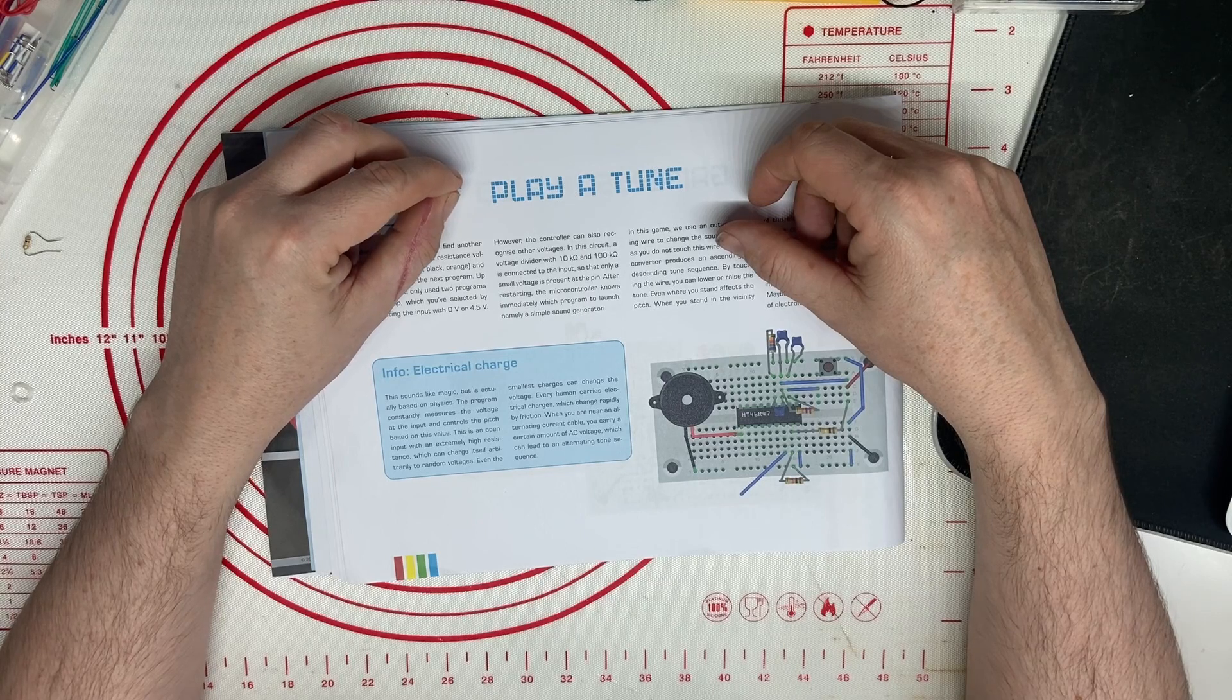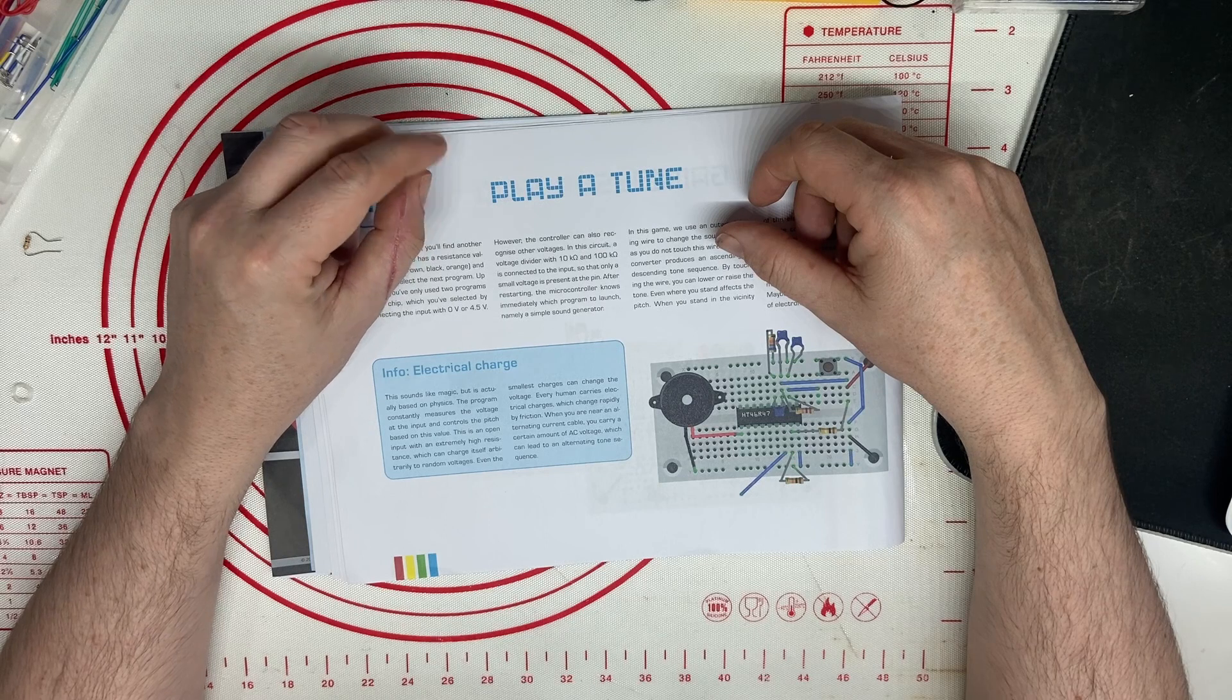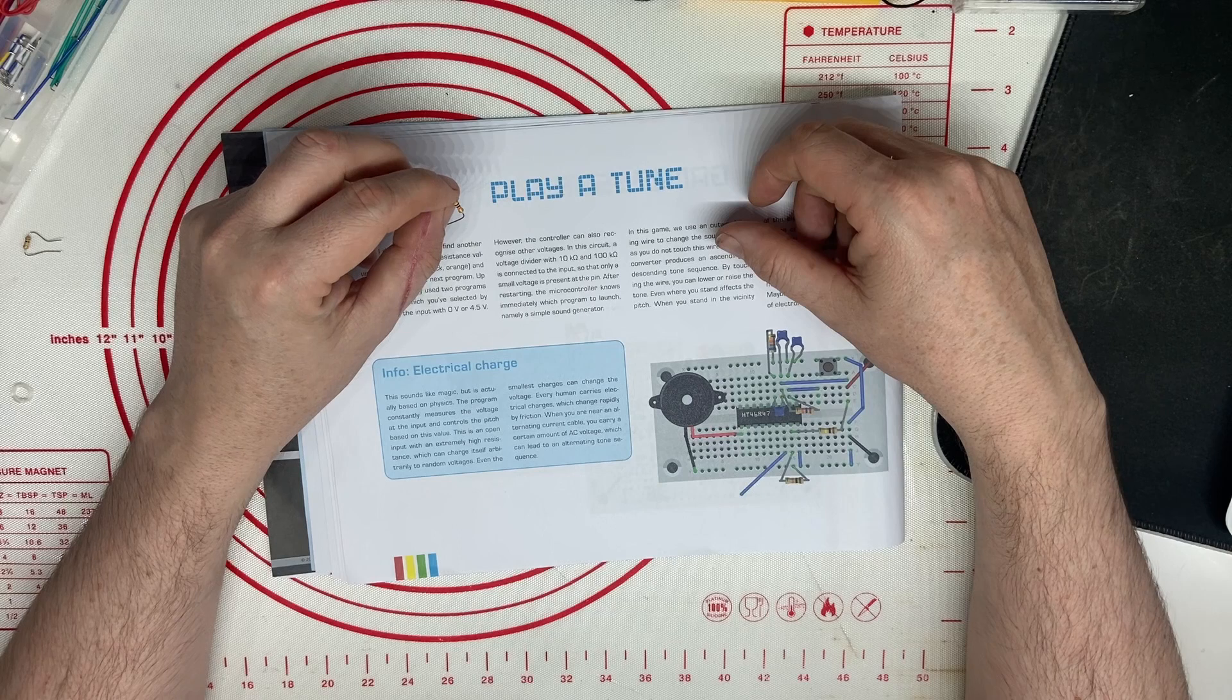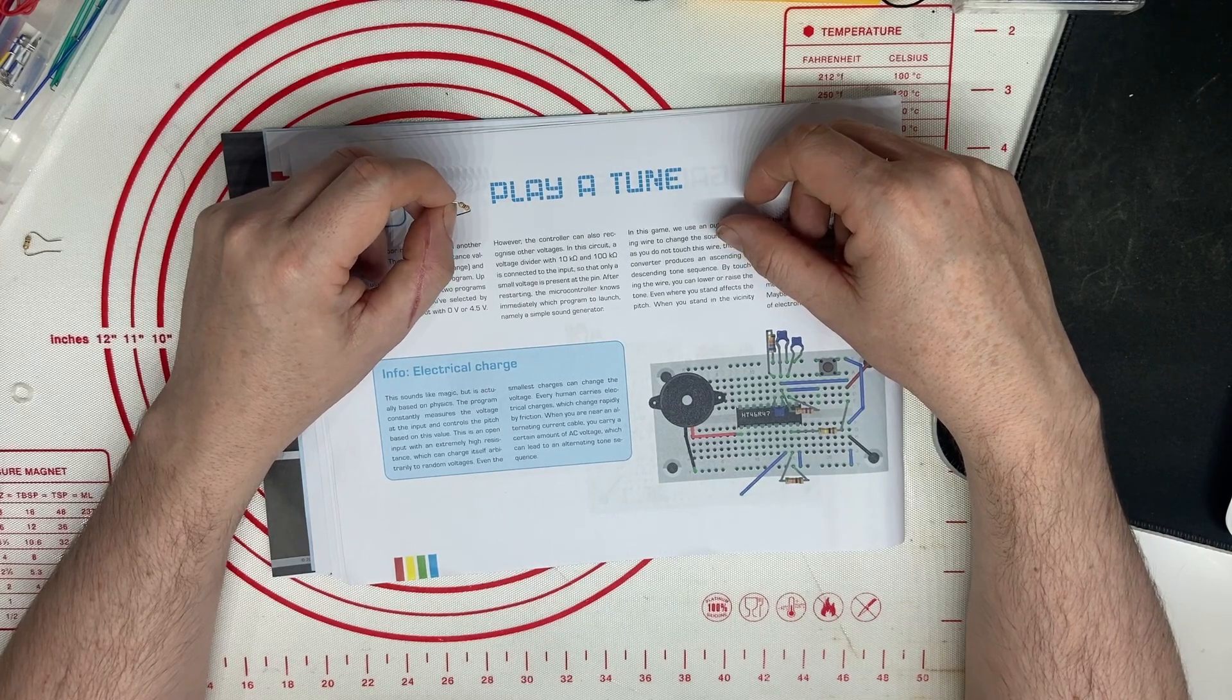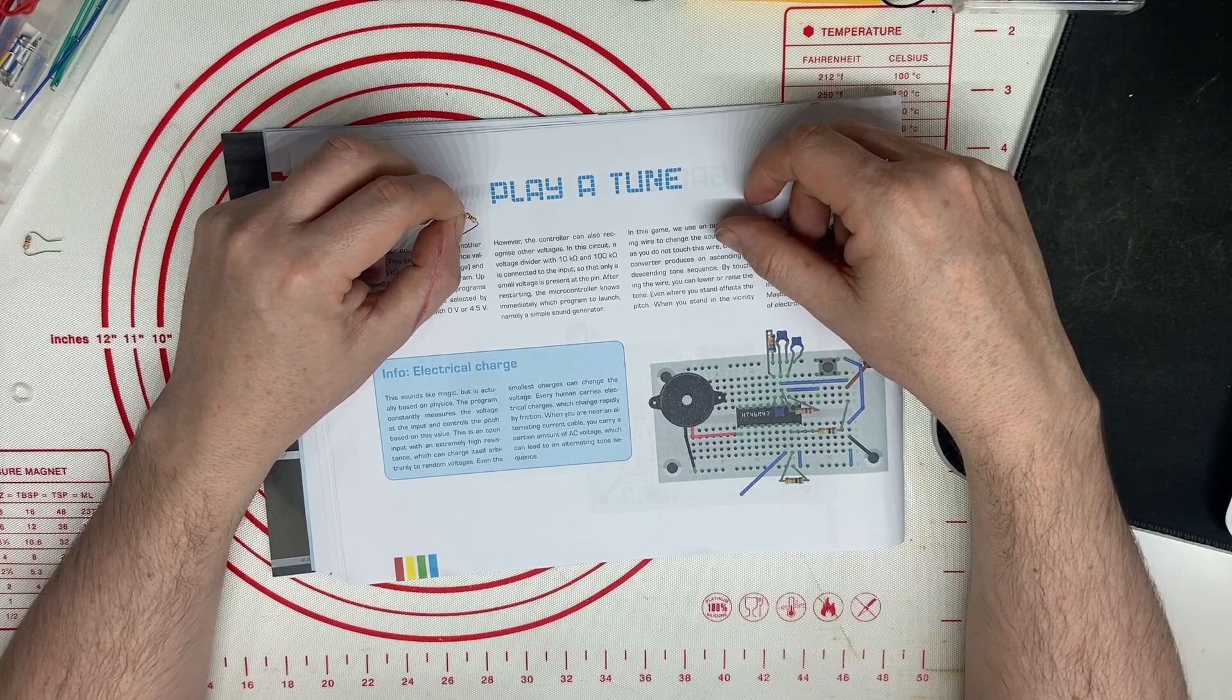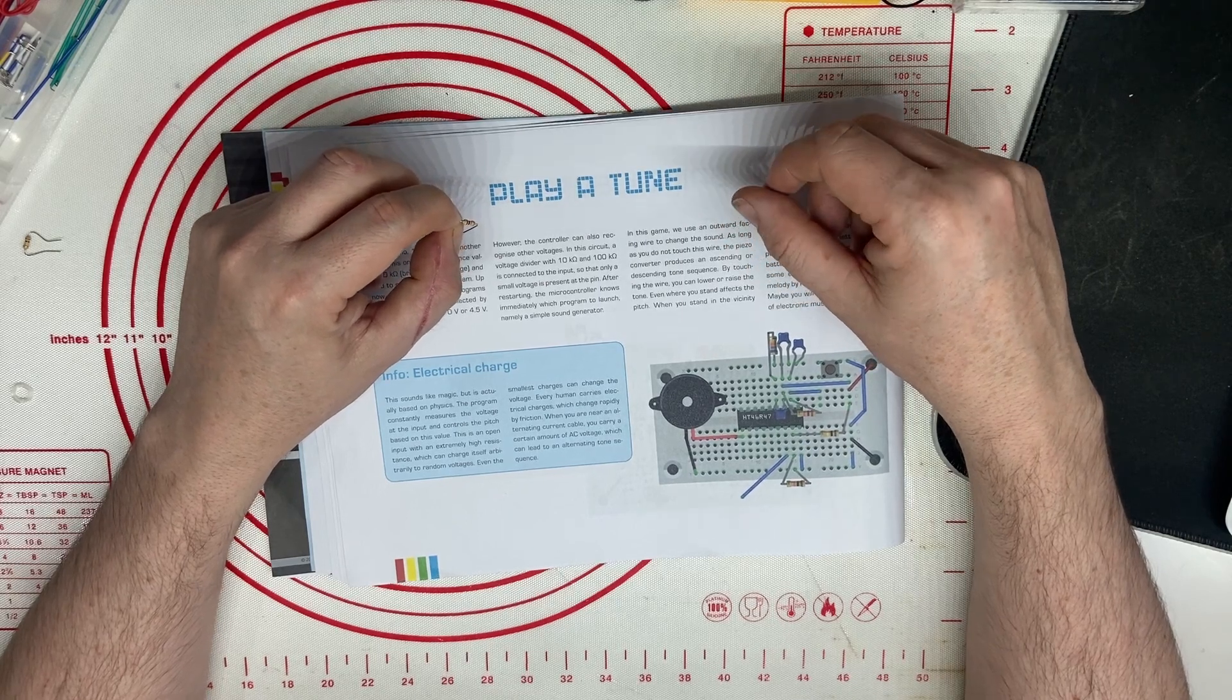It can charge itself arbitrarily to random voltages. Even the smallest charges can change the voltage. Every human carries electrical charge which charges rapidly by friction. When you are near an alternating current cable, you carry a certain amount of AC voltage which can lead to an alternating tone ascending sequence.